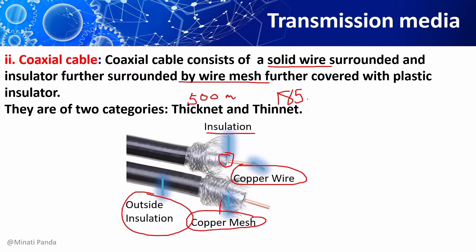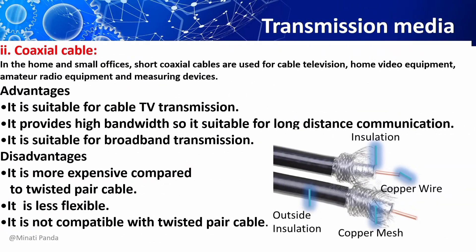Coaxial cable provides a cheap means of transporting multi-channel television signals. The transmission characteristics of coaxial cables are considerably better than those of twisted pair cable, offering higher bandwidths of up to 400 megabytes per second, which is suitable for long-distance communication. Coaxial cable can also be used for broadband transmission, where several channels can be transmitted simultaneously, for example in cable TV.